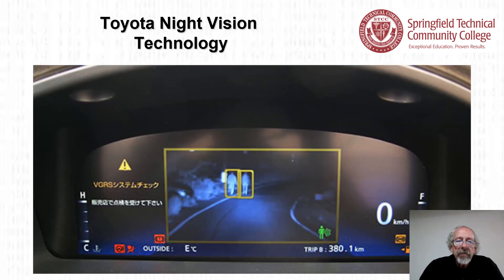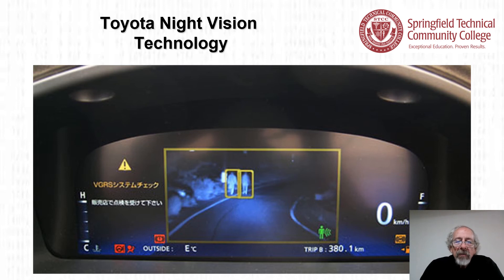A Toyota night vision technology heads-up display on the dash has picked out two people walking who you normally would not be able to see with your own eyes.